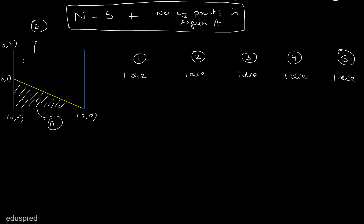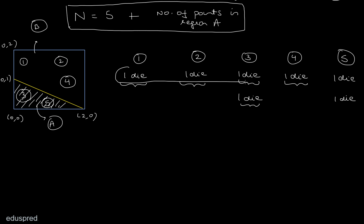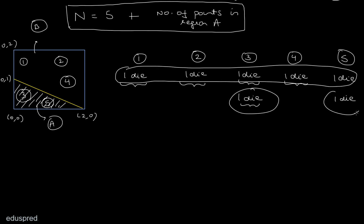Let's verify with an example. If points 1, 2, 3, 4 are in Region B, each contributes one die. If point 5 is in Region A, it contributes one extra die — so that's one more die again. This gives N = 5 + 2 = 7. That's why we write N = 5 + (number of points in Region A). In this example, two points are in Region A, so N = 5 + 2 = 7.